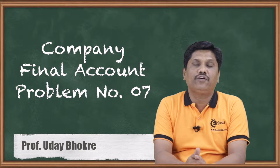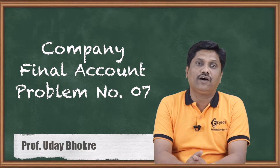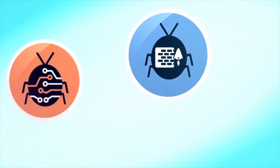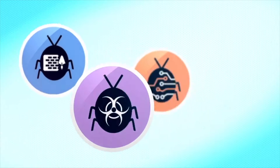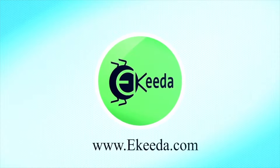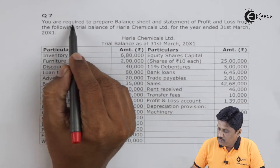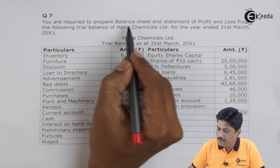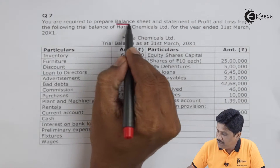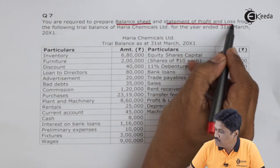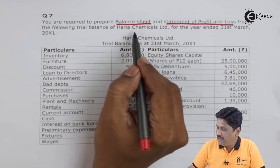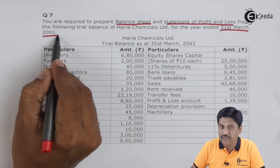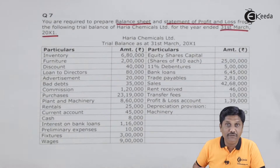Today we are going to learn for CA Inter Accountancy Subject — Company Final Accounts. Question number 7 is on your screen. You are required to prepare a balance sheet and statement of profit and loss from the following trial balance of Hariya Chemicals Limited for the year ended 31st March 20X1.